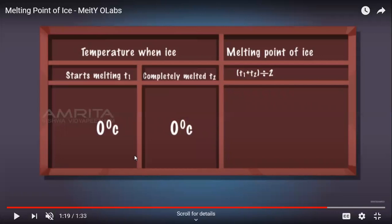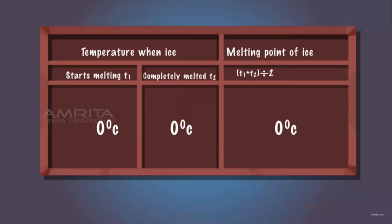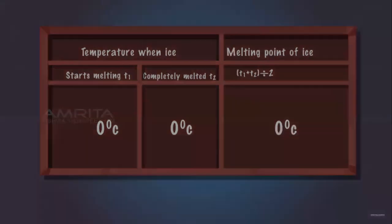This is how we are going to represent it in the form of a table. So temperature when ice starts melting T1, 0 degree Celsius, completely melted T2, 0 degree Celsius. And then you can calculate the melting point of ice as T1 plus T2 divided by 2. It's simple. We are just calculating the average. We are just finding out the average of the temperature. So you will add T1 plus T2 and then you will divide by 2. So this is how we get the melting point of ice as 0 degree Celsius.